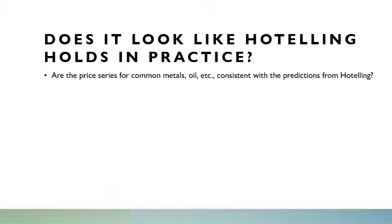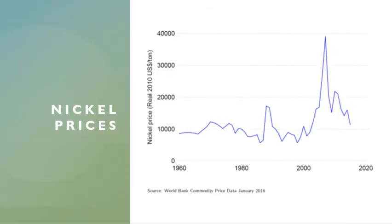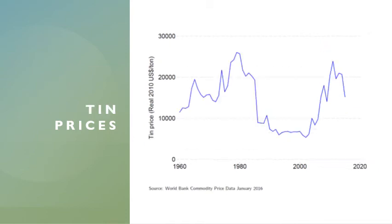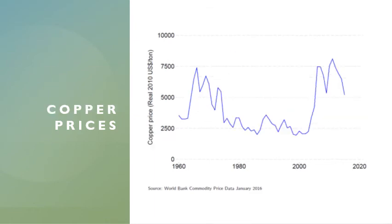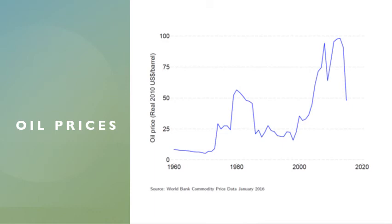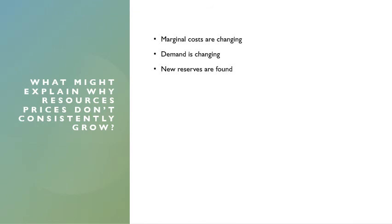Does Hoteling hold in practice? Let's look at some price series for common metals, oil, and similar resources. The price of nickel increased somewhat in the mid-2000s but has since come down. For tin, there's no visible trend in prices. Copper prices similarly show no obvious upward trend. For oil, you can squint and perhaps see an upward trend, but there's also a more recent decline in prices. So what might explain resource prices that don't consistently grow?